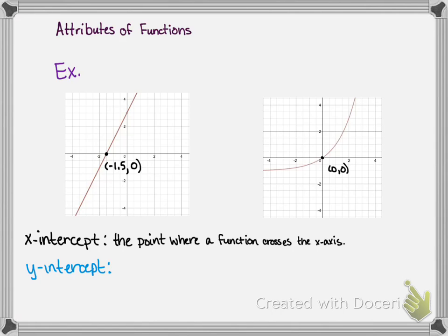The y-intercepts. That's the point where a function crosses the y-axis. So on the first function it crosses the y-axis here at the point (0, 3). And the second function crosses the y-axis again at the origin, again at the point (0, 0).